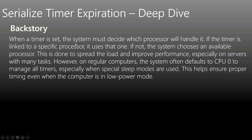The system must decide which processor will handle the timer. If the timer is linked to a specific processor, it uses that one; if not, the system chooses an available processor. This is done to spread the load and improve performance, especially on servers with many tasks. However, on regular computers the system often defaults to CPU zero to manage all timers, especially when special sleep modes are used, to ensure proper timing even in low power mode.